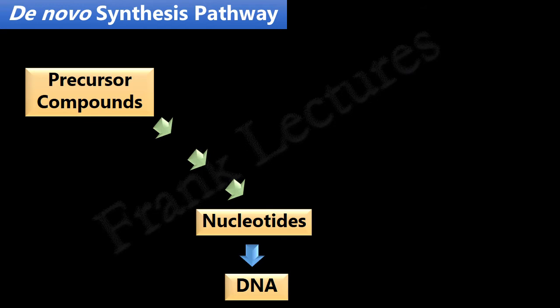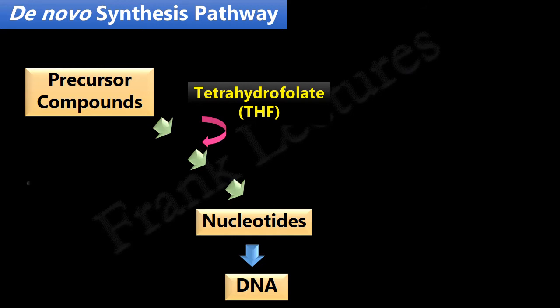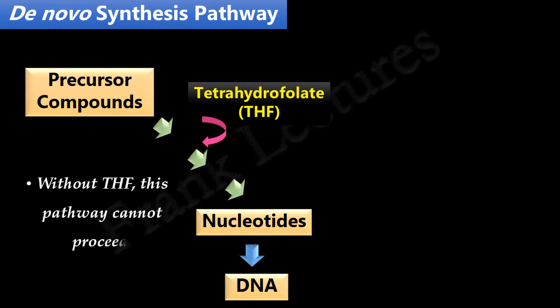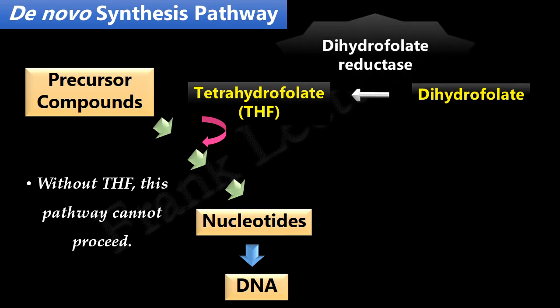At the initial step of the de novo pathway, tetrahydrofolate is essentially required — without tetrahydrofolate, this pathway cannot proceed. Tetrahydrofolate is made from dihydrofolate, and this reaction is catalyzed by the enzyme dihydrofolate reductase. If formation of tetrahydrofolate is blocked somehow, synthesis of nucleotides by the de novo pathway will automatically fail.